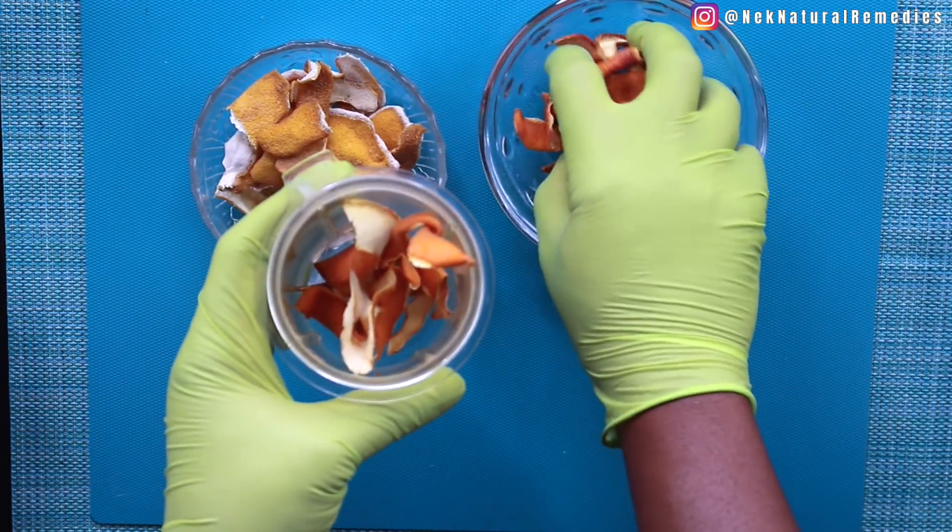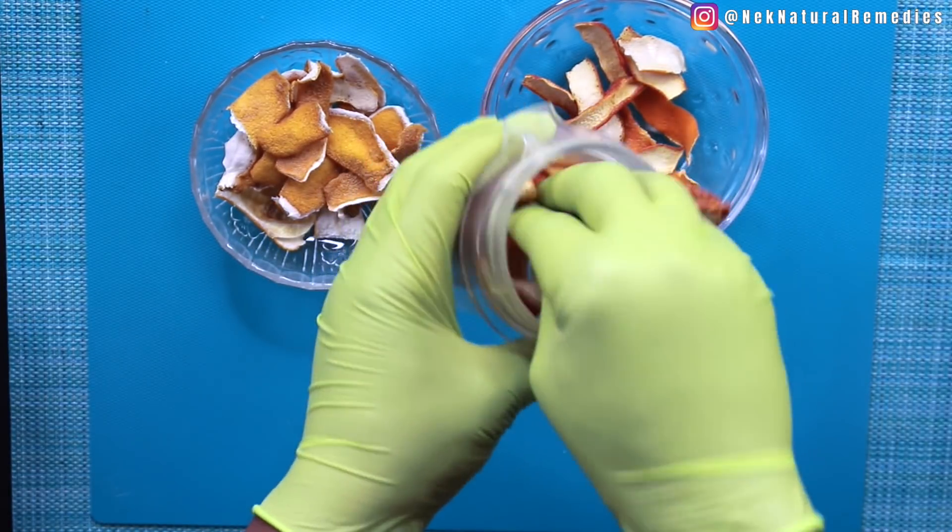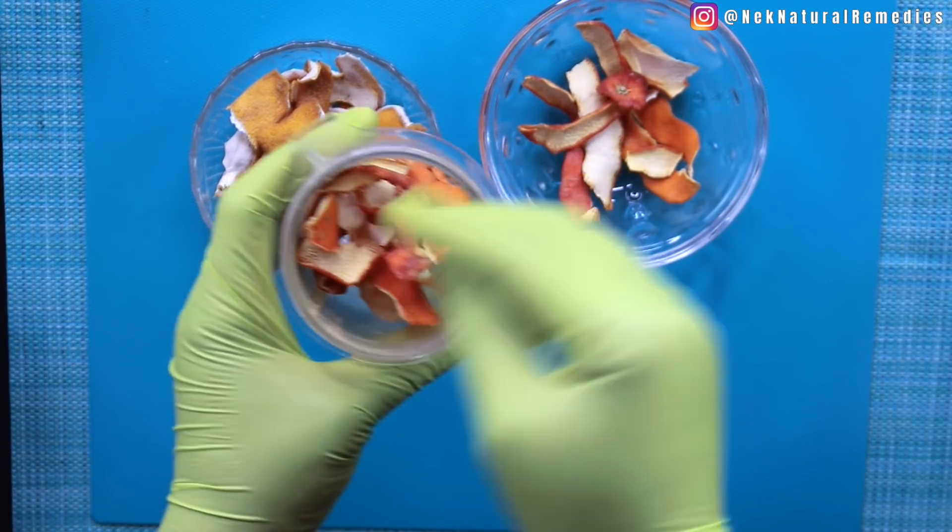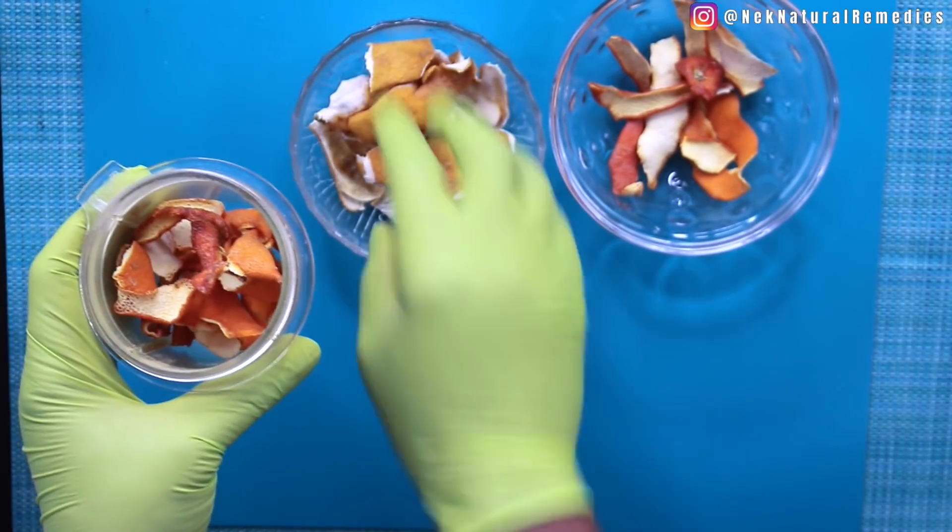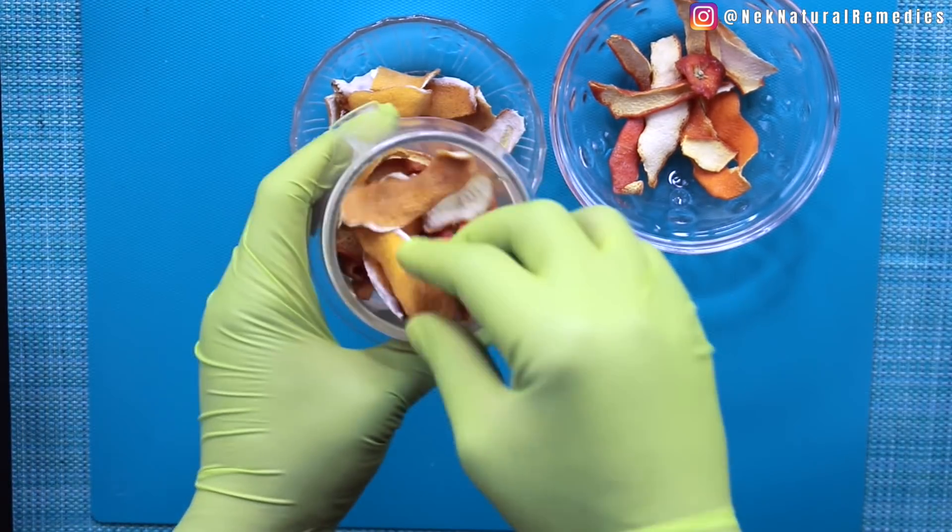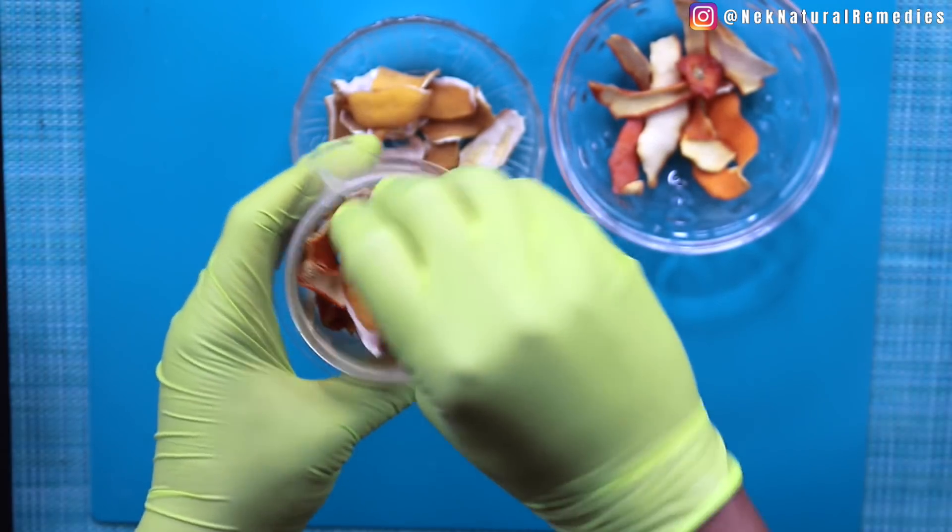So what you'll do with the peels is collect some of them, put them in your blender and blend them smoothly so that you'll be able to add it to the recipe. Blend it very well to be like powder.